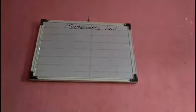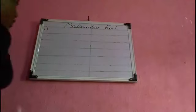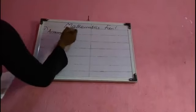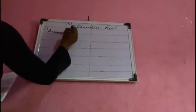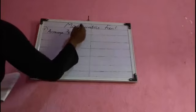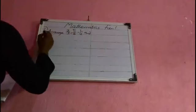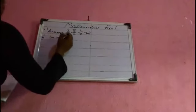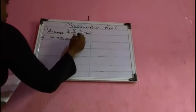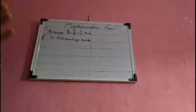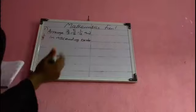So a very quick one — let's look at these questions together, solve them, and have fun with it. Number one: arrange two over three, five over six, one over two, and one over four in ascending order. What does ascending order mean? We should arrange from the smallest to the biggest.